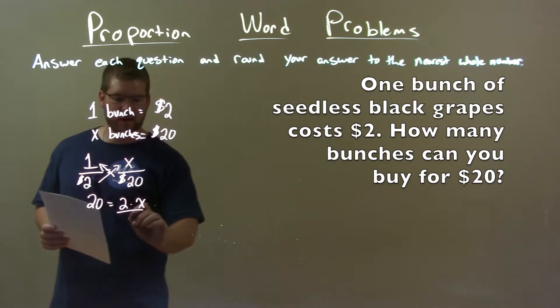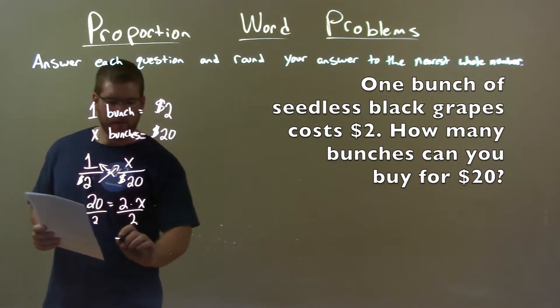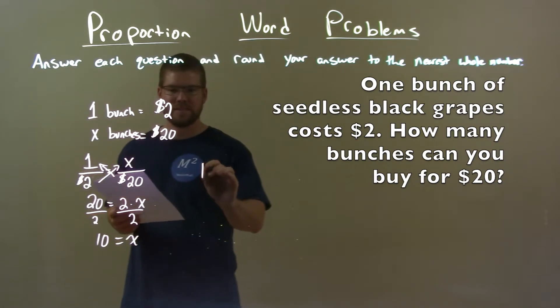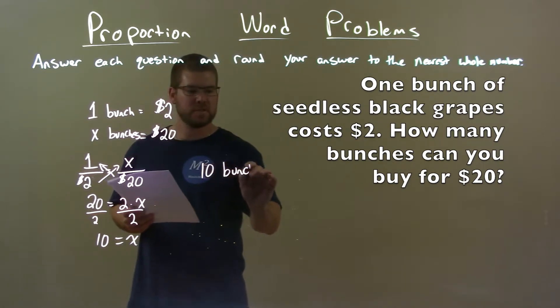Now we solve for x, we divide both sides by 2. And we get x by itself and it's equal to 10. So our final answer is just 10 bunches.